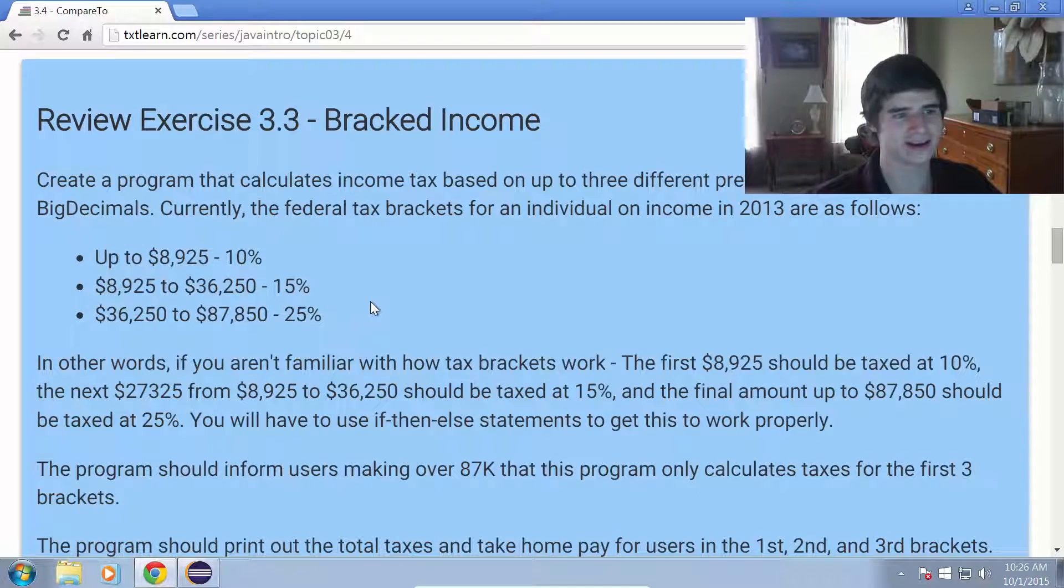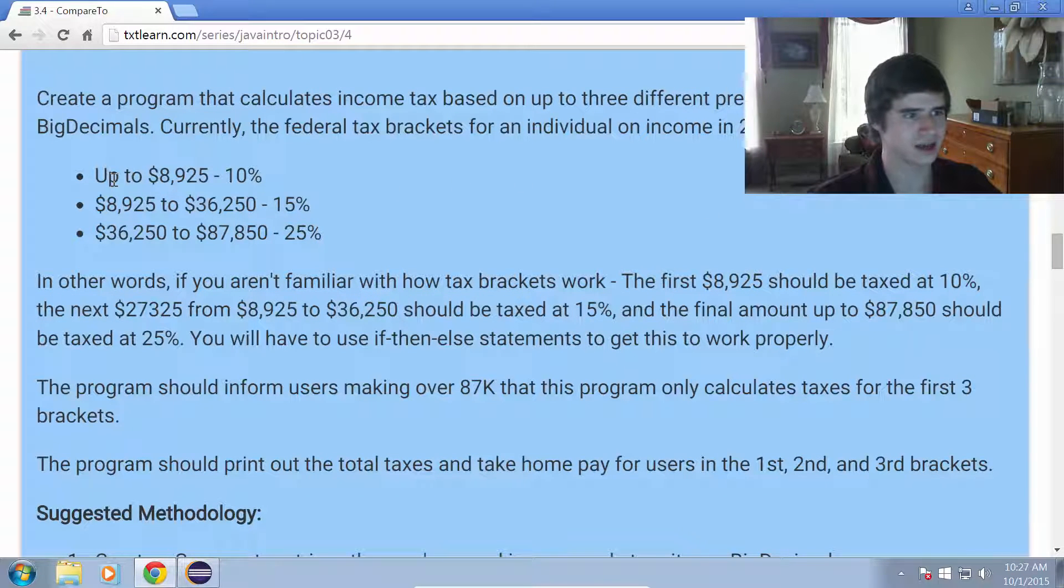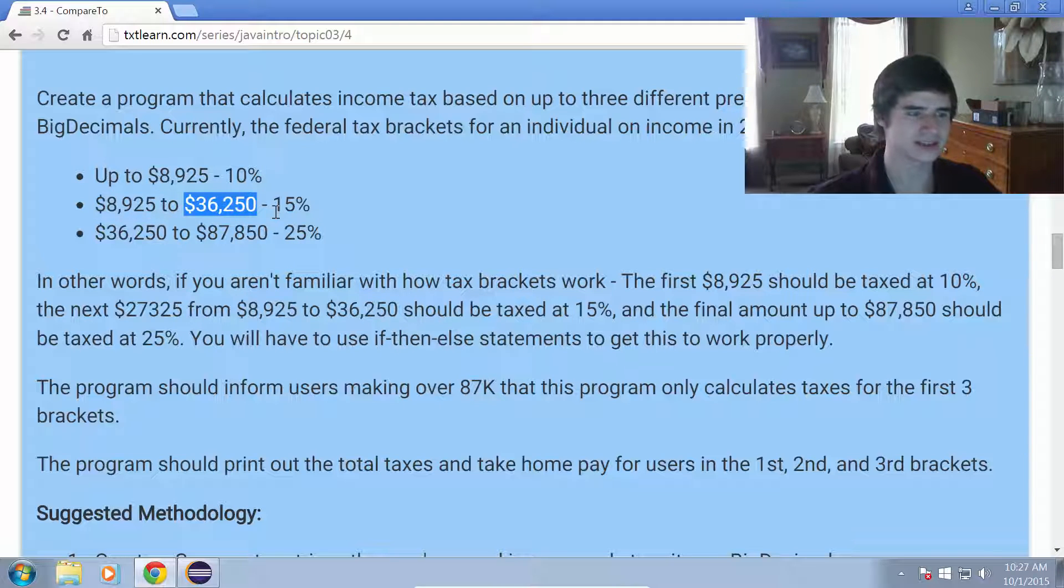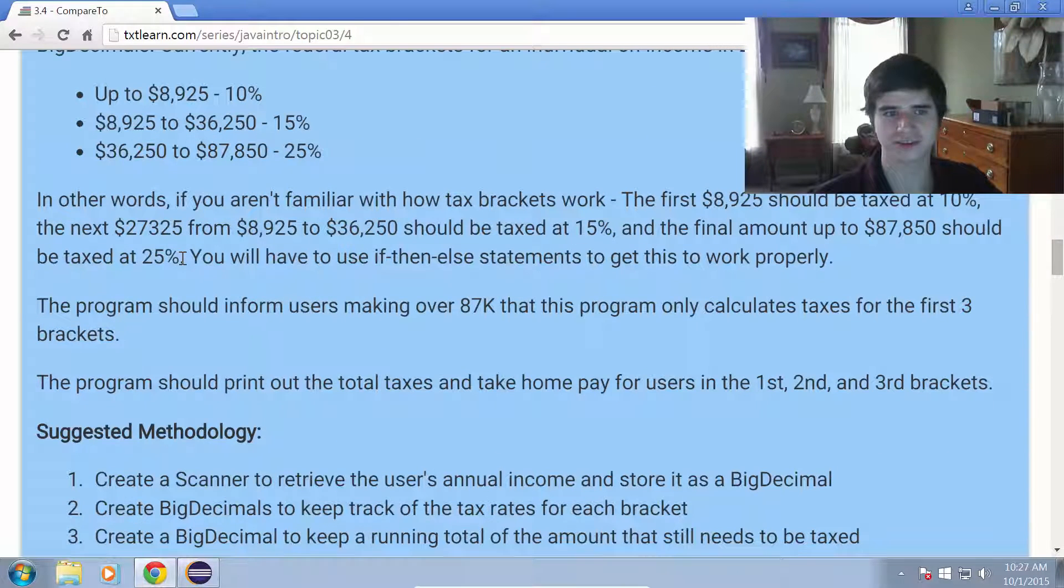Create a program that calculates income tax based on up to three different predefined tax brackets using BigDecimals. Currently, the federal tax brackets for an individual on income in 2013 are as follows. So in 2013, up to $8,925 was taxed at 10%. From that amount up through $36,000 was taxed at 15%. And $36,000 to $87,000 was taxed at 25%.